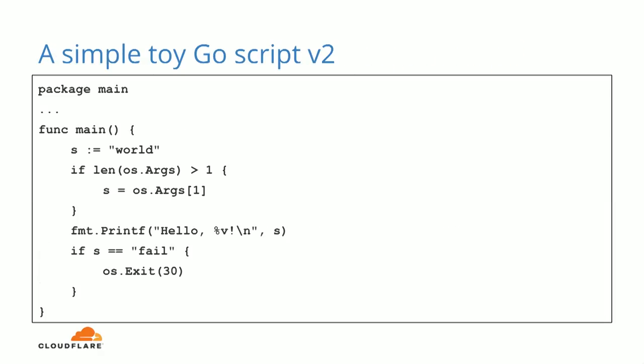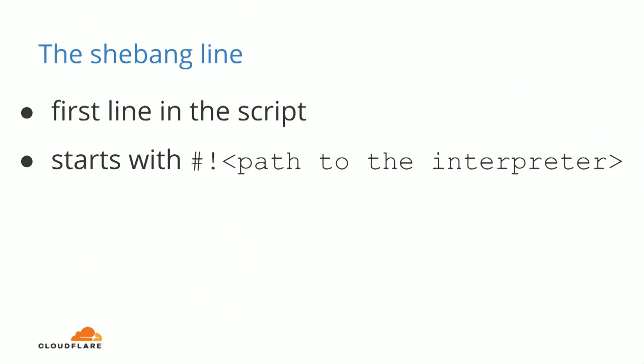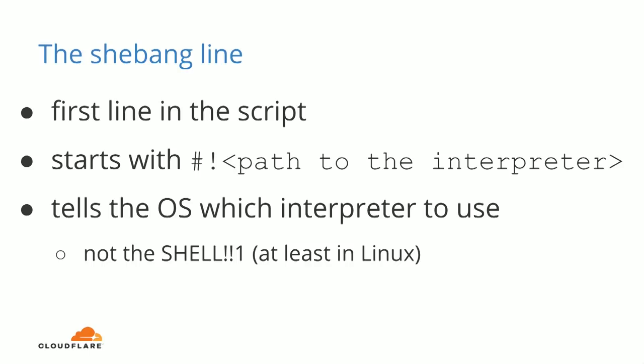So how do you do that? Our script will be slightly modified: it accepts one command line argument, and on a specific condition it may fail with an exit code. And finally, how do you achieve the executable part? In Linux and most Unix-like operating systems, you do it with a shebang line. The shebang line is the first line in your script — it starts with a hash, exclamation mark, and the path to the interpreter. What the shebang line does is tell your operating system — and keep in mind it tells your operating system, not your shell — which interpreter to use for the script. I will come back to that later.